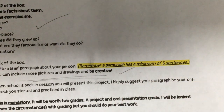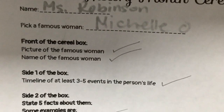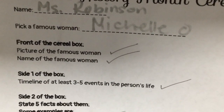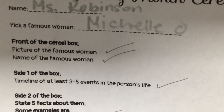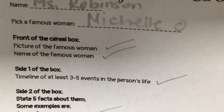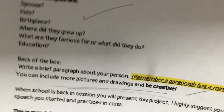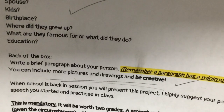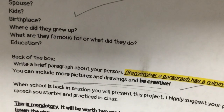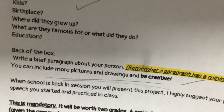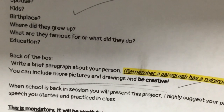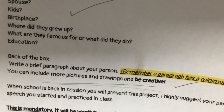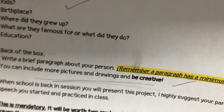To recap: on the front you need a picture and their name. On one side of your box, you need a timeline — minimum three events, five max. The second side needs five facts about them. On the back is your paragraph and extra pictures of your person, and that paragraph is what you'll use for your speech. When you come back to school, you should be able to present your paragraph as your speech in front of the class to share what you've learned about your person.